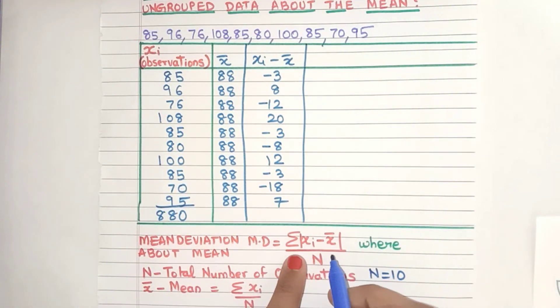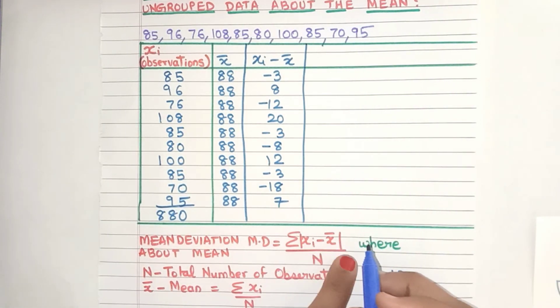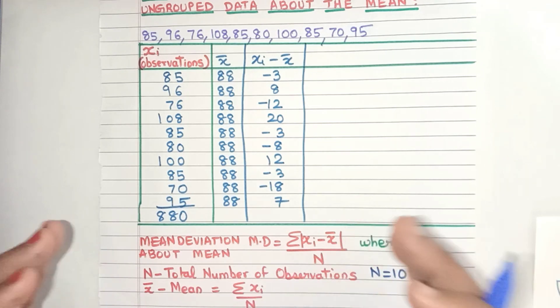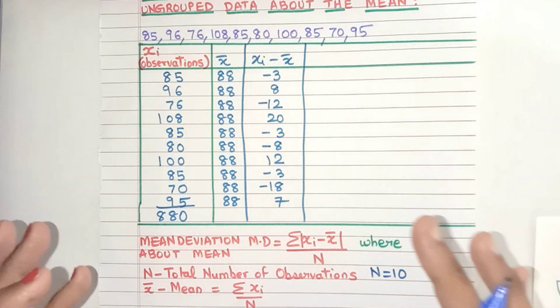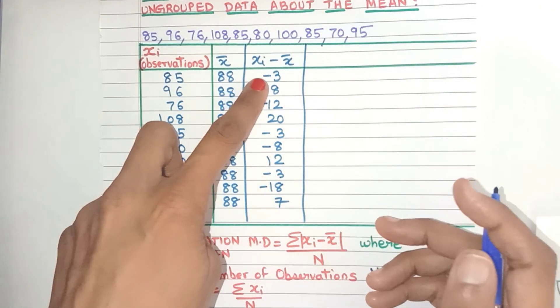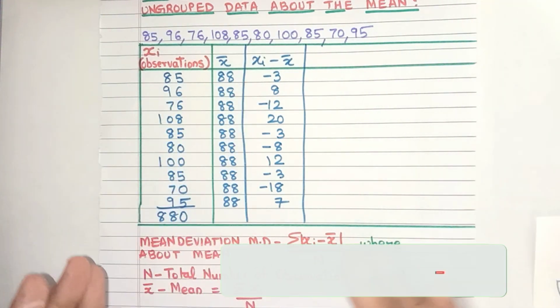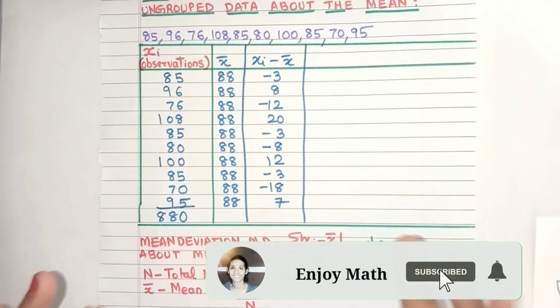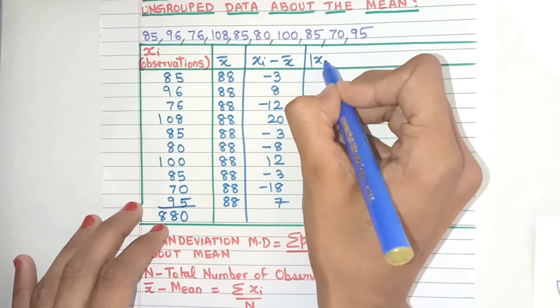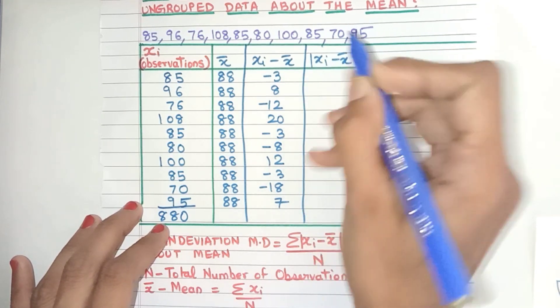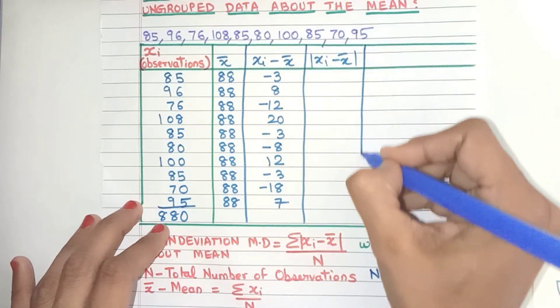Now again let's see the formula. We need mod of xi minus x̄. Now what is this mod? Mod or the modulus is also known as the absolute value and it simply gives us the positive value of any number. So if I have minus 3, then modulus of minus 3 will give me plus 3. What if the number is already positive? Then it will not change the sign at all. That's it, modulus is very easy.